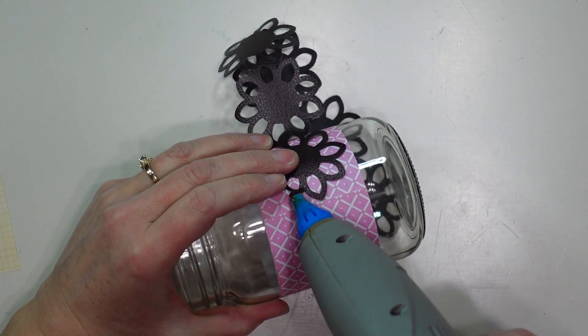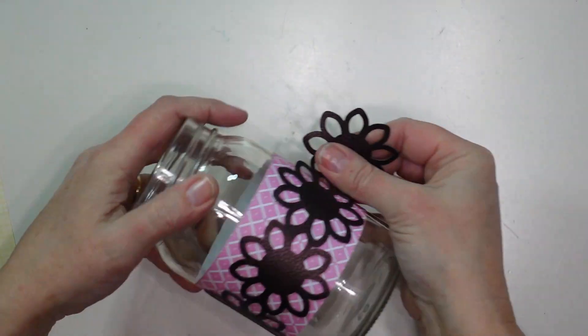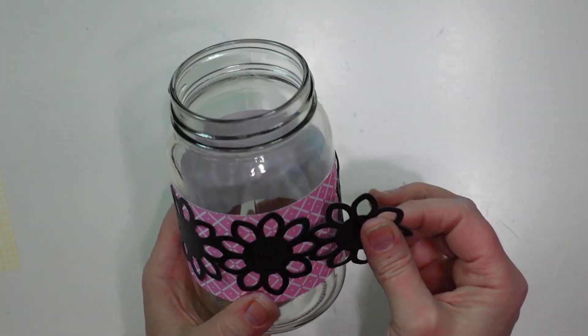And then I am going to use my hot glue gun just to add a little bit of hot glue to secure my faux leather flowers on top of that strip of paper.